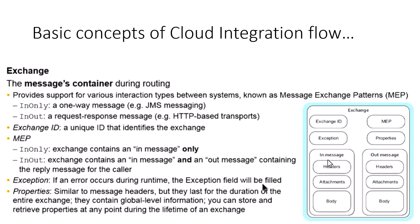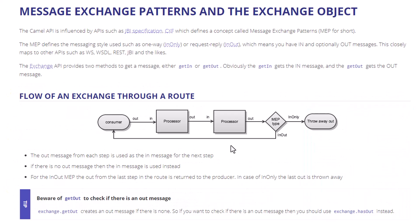The in message has the headers, the attachments, and the body — attachments are optional. Now if it is an in-out message, which means the message leaves the iFlow and goes back to the sender, then you have the out message, which has the same structure as the in message. You don't have the out message in the case of in-only because the message is completely ignored — nothing is sent back to the sender.